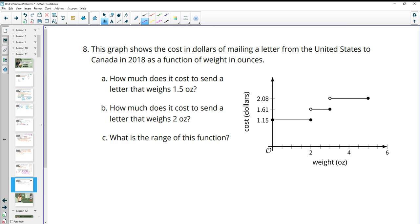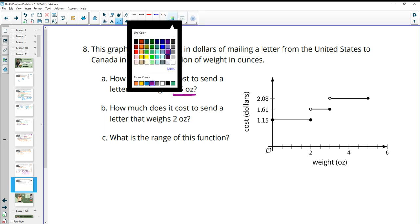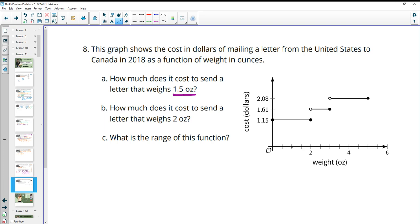Number eight, this graph shows the cost in dollars of mailing a letter from the United States to Canada in 2018 as a function of the weight in ounces. So how much does it cost to send a letter that's 1.5 ounces? So if we look at where 1.5 is on the graph, so this is 1, so 1.5 is here, and that's costing $1.15. So it's costing $1.15.